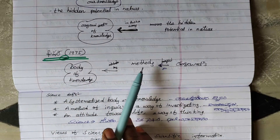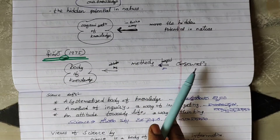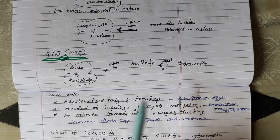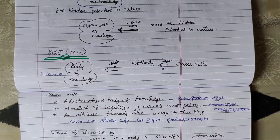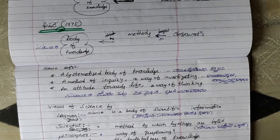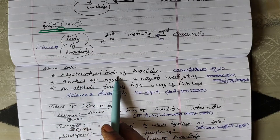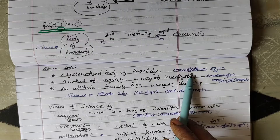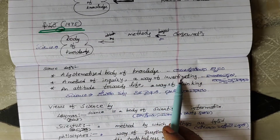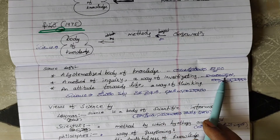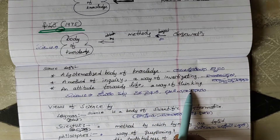Fisher: science is the body of knowledge obtained by methods based upon observations. This is how it is used. It depends on the century — a method of inquiry, a way of investigation. This science is a way of thinking, an attitude towards life.